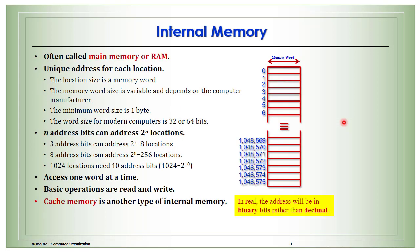The internal memory, or main memory or RAM, is a collection of locations. Each location has an address, and this address is in binary. The location size is the memory word, which is variable and depends on the computer manufacturer. The minimum size of the word is one byte, but in modern computers it is four bytes or eight bytes.